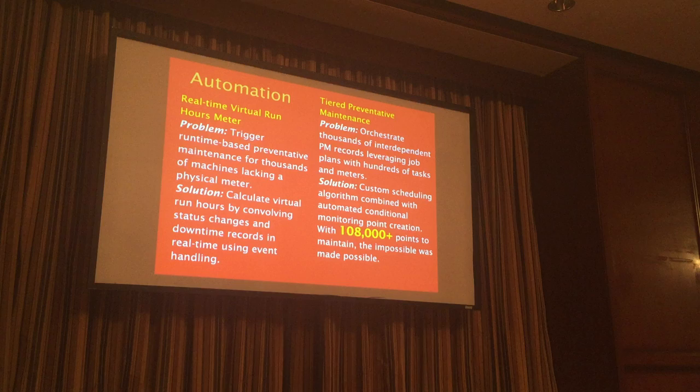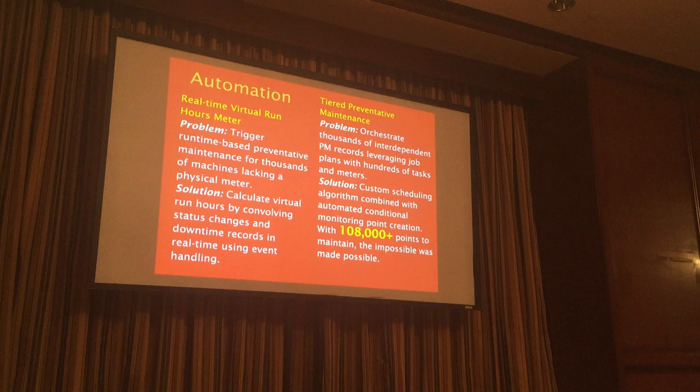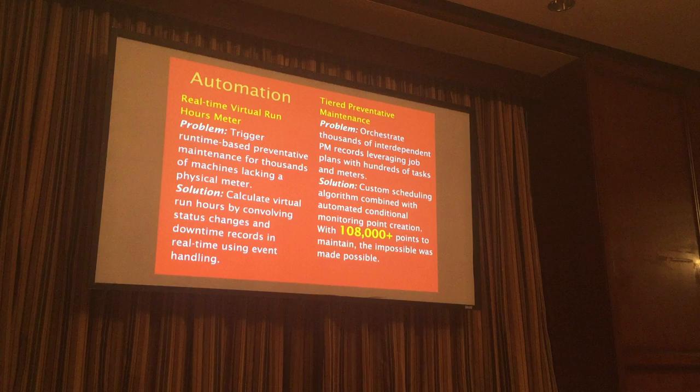We built services and listeners that listen for downtime changes and asset status changes. Then we used parallelization — the technique of taking a very large amount of work and breaking it apart across multiple threads. We used that with the UI process for updating the runtime. When you update the downtime or asset status change, a parallel process kicks off, lifts all the impacted downtime records and runtime records, and updates them in real time. It works outstandingly, solves a very big difficult problem, and you can run your preventive maintenance off of that.